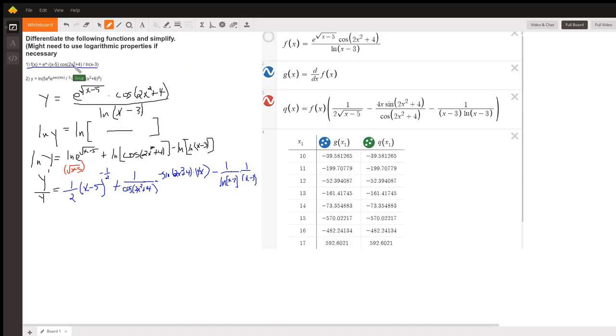So I've defined f of x, just like we have over here. And then I've used the Desmos derivative operator to get the definition for f prime or y prime. And then I've also typed in the answer that I got over here in a little more simplified form. And then I made up a table to show that it looks like their g and q are identical. So this is sort of a way to confirm your answer.